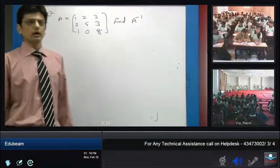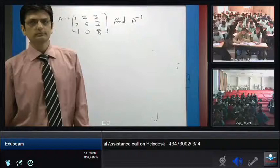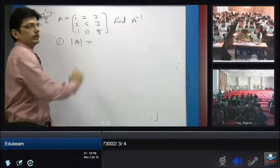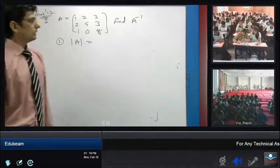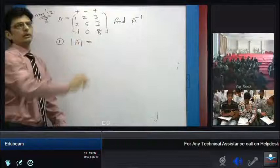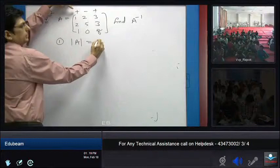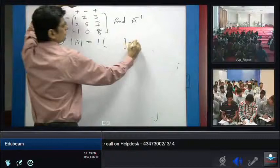Step number one is to find out the determinant of A. To find the determinant, use the plus-minus-plus sign pattern along the top row. The first number gets plus one, the second gets minus two, and the third gets plus three.